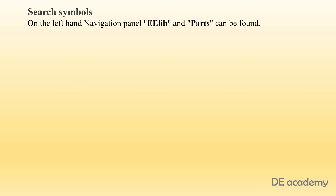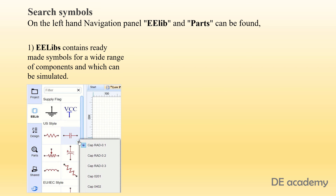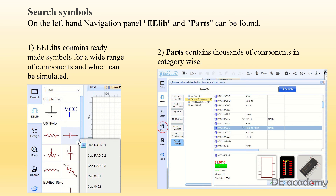After knowing about design tools, the next step is searching symbols. The option for searching symbols can be found on the left-hand navigation panel. There are two sections: eelibs, which contains ready-made symbols for a wide range of components that can be simulated, and parts, which contains thousands of components organized in categories.